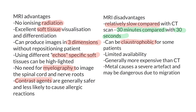MRI also has relatively limited availability in Melbourne. There are two scanners, one of which is a permanent magnet with slower scans, and the other has a waiting time for access. MRIs are generally more expensive than CT scan, both in terms of individual scans and the cost of equipment. A CT scanner costs about $250,000 to $300,000 for a new machine, whereas a new MRI can cost one million to two million dollars. A big disadvantage of MRI is that metal can cause severe artifact and can even be dangerous if there is migration of implants.